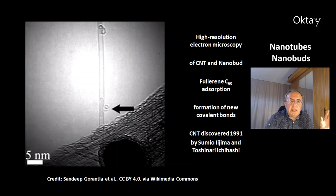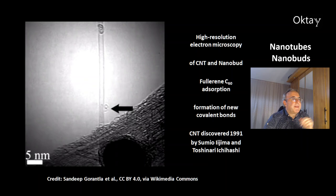You can make nanobuds by adsorption of fullerene molecules, football molecules C60, on carbon nanotubes. In this process new covalent bonds are formed, and hybridization of some atoms changes from sp2 to sp3. In this movie you will see an adsorption of another C60 molecule.